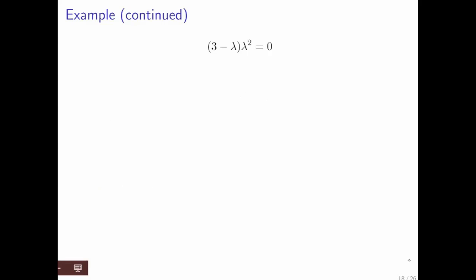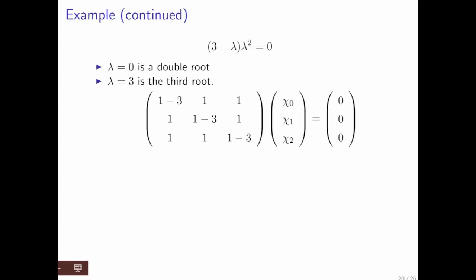Again, here's the characteristic polynomial. Lambda equals 0 is a double root. We're going to look at lambda equals 3, which is the third root. In order to find an eigenvector associated with that, all we do is subtract 3 from the diagonal. And what we get is this matrix right here. And then we could reduce that matrix to row echelon form and find a vector in the null space.